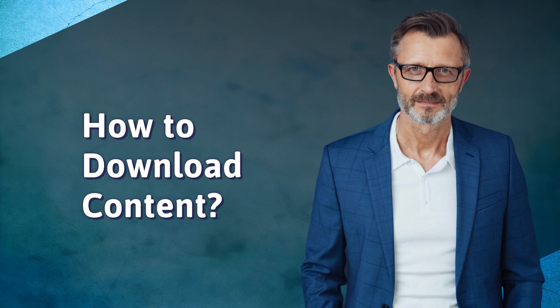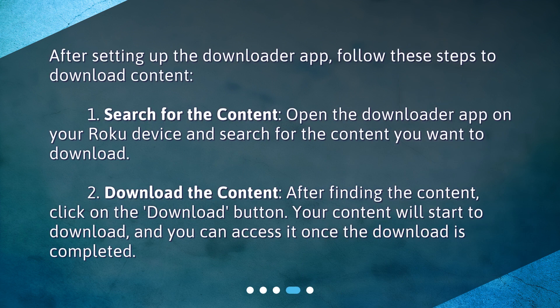How to download content? After setting up the Downloader app, follow these steps to download content. Step 1: Search for the content — open the Downloader app on your Roku device and search for the content you want to download. Step 2: Download the content — after finding the content, click on the Download button. Your content will start to download, and you can access it once the download is completed.